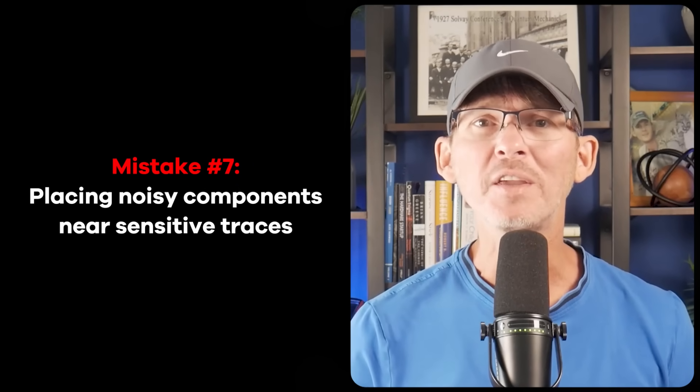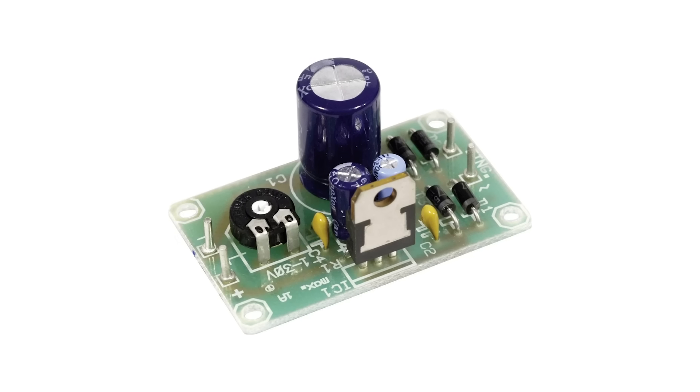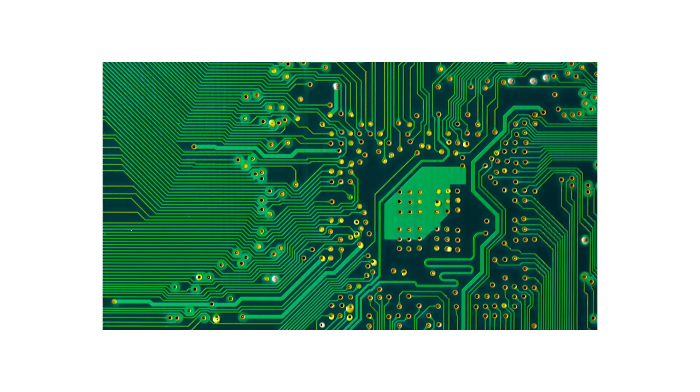Mistake number seven is placing noisy components near sensitive traces. When it comes to passing EMC and RF certification, component placement is just as important as trace routing. Placing high-speed or noisy components — like switching regulators, crystal oscillators, or digital buses — too close to sensitive analog traces, antennas, or RF paths can create unexpected interference. This can result in spurious emissions that show up in radiated emissions tests or degrade the performance of nearby wireless circuits.